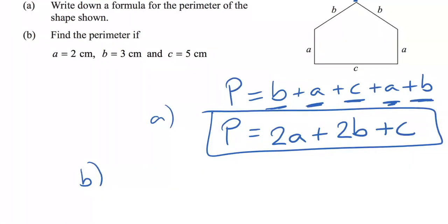In part B, we're told some information. A is 2, B is 3 centimeters, and C is 5 centimeters. So let's find that perimeter now. We're going to use substitution to help us. The perimeter is equal to 2 lots of 2, because A is 2, plus 2 lots of 3, because B is 3, plus 5.